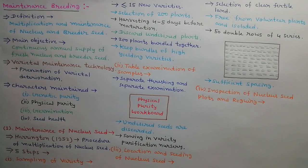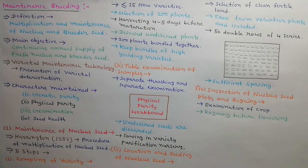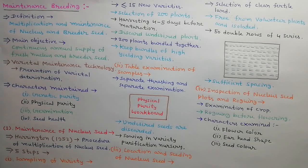Fourth step is inspection of nucleus seed plots and rogging. Examination is done from seedling stage to maturity. If any plot seems distinct from nucleus seed variety then it must be removed before flowering. After flowering and during maturation plots are examined for other characters such as flower color, ear head shape, seed color, etc. and off-types are removed before harvesting. When a plant is removed after flowering then all plants in 3 meter radius around must also be removed to prevent contamination.